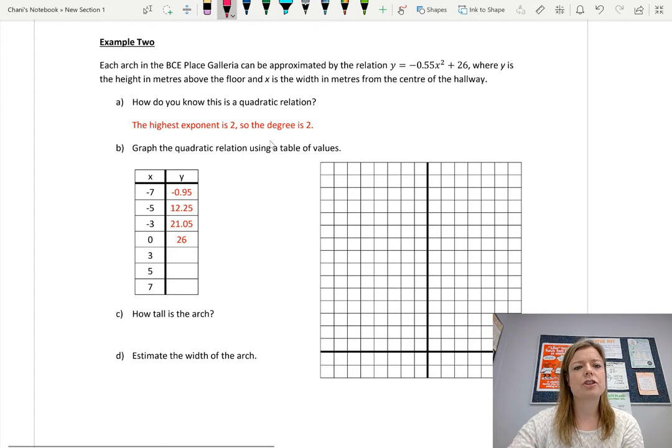This is an arch in like a galleria, a mall. So think about it, an arch looks like this. So y is the height in meters above the floor. Obviously, we don't want it going below the floor. And x is the width from the center. So the highest height is going to be here on the center, and then it's going to curve down. So how do we know this is quadratic? We look at the equation, and the highest exponent is 2. It's degree 2. So therefore, it's quadratic.